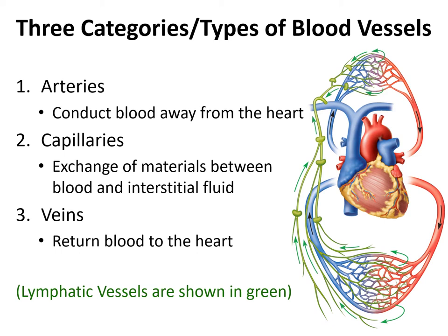In this diagram, arteries are shown in red. Capillaries are shown in both red and blue, which indicates the degree of oxygenation. And blue vessels are considered veins returning blood to the heart. Since you've already studied heart anatomy, you're familiar with the fact that arteries and veins have opposing functions. Arteries conduct blood away from the heart. Capillaries allow the exchange of materials between blood and the interstitial fluid. And veins conduct blood back towards the heart.